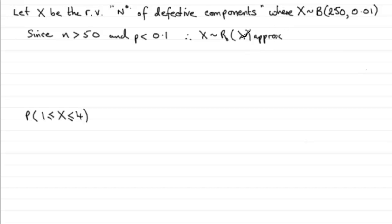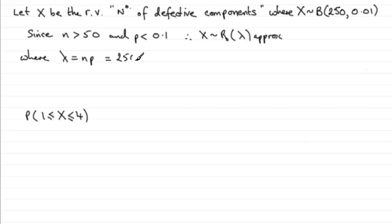Now what is lambda, the mean? Well, lambda is equal to NP — that's the expected value or mean that we get from the binomial distribution. In our case, N is 250 multiplied by P of 0.01, which gives us 2.5.